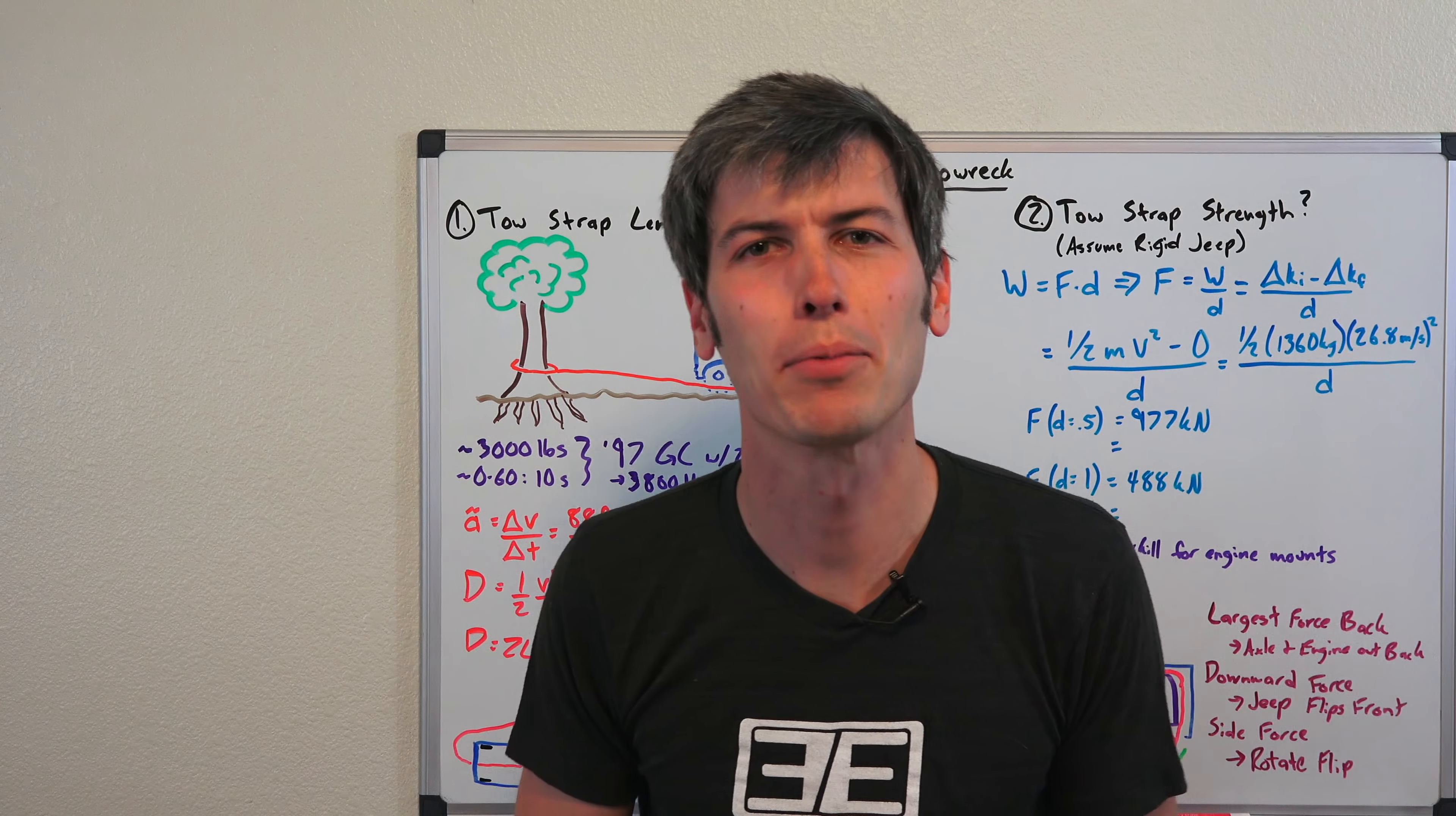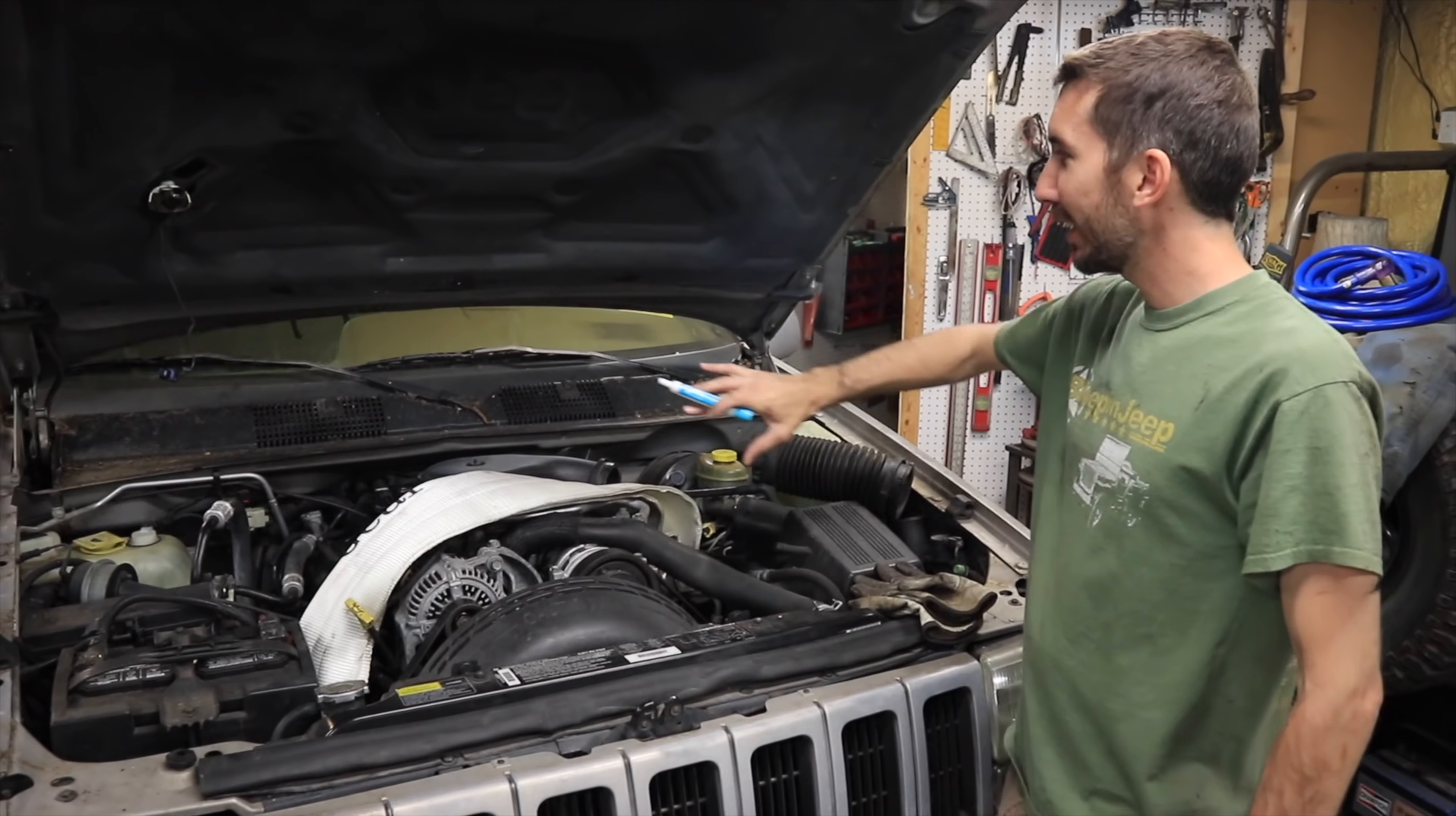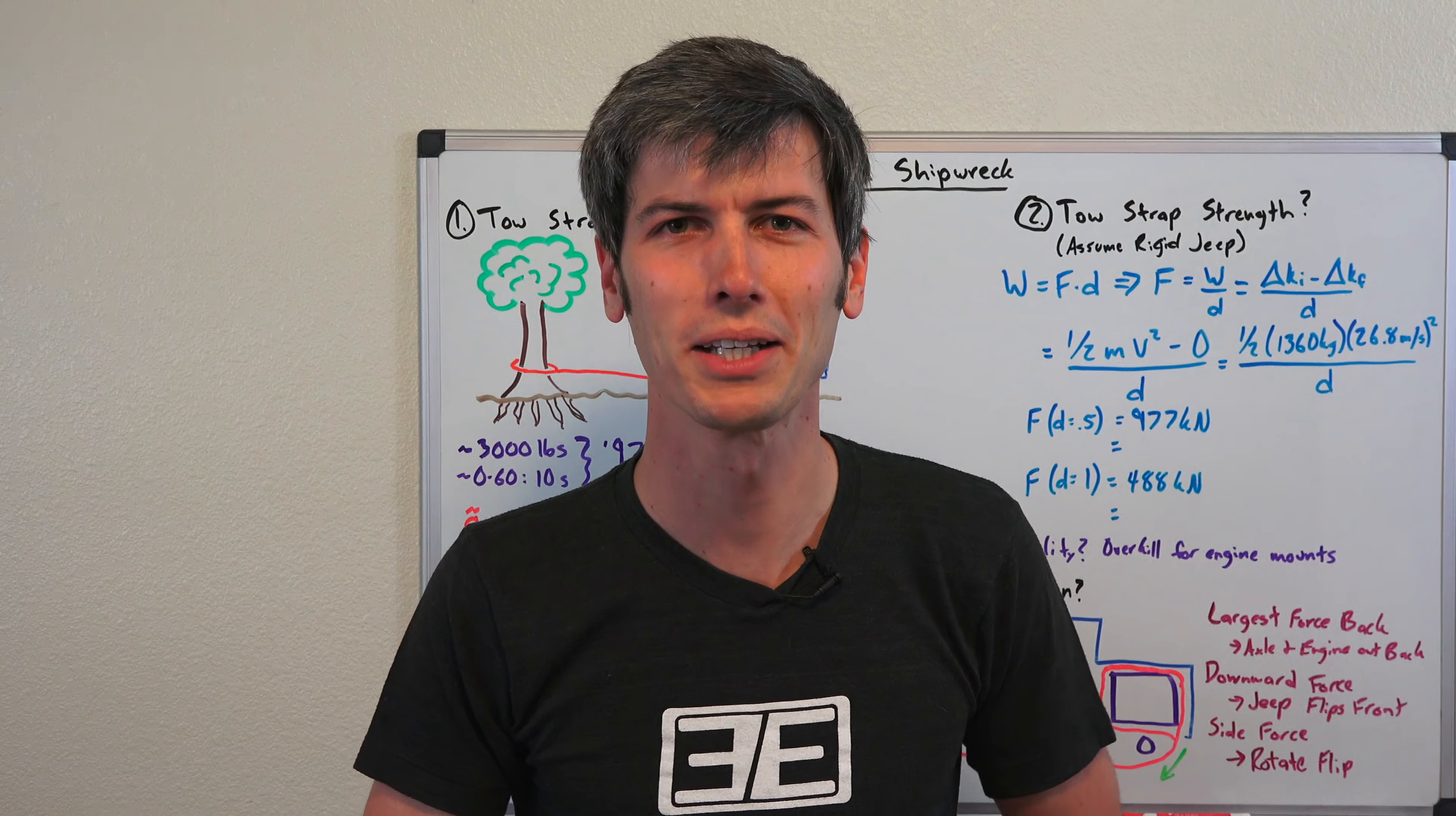Hello everyone and welcome to a collaboration between myself and Matt of Bleepin' Jeep. So what's going on? Matt has tied a tow strap around the engine of a Jeep and then tied the other end around a tree, and then he's going to accelerate that Jeep and see what happens when it hits the end of the leash.